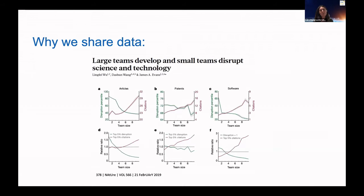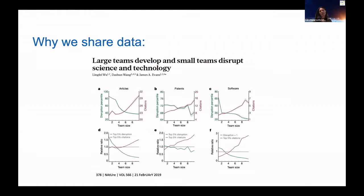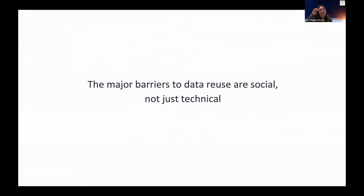We need data reuse for both of these processes. We need to allow individual labs access to the data they need to innovate, and quite importantly, if we're ever going to get the translational impact we'd like, we need to allow other groups to use the data to objectively evaluate the outputs that each of us are producing. My thesis for this talk is that the major barriers to data reuse — to consumption of data generated by others — are social; they're not just technical or even scientific.